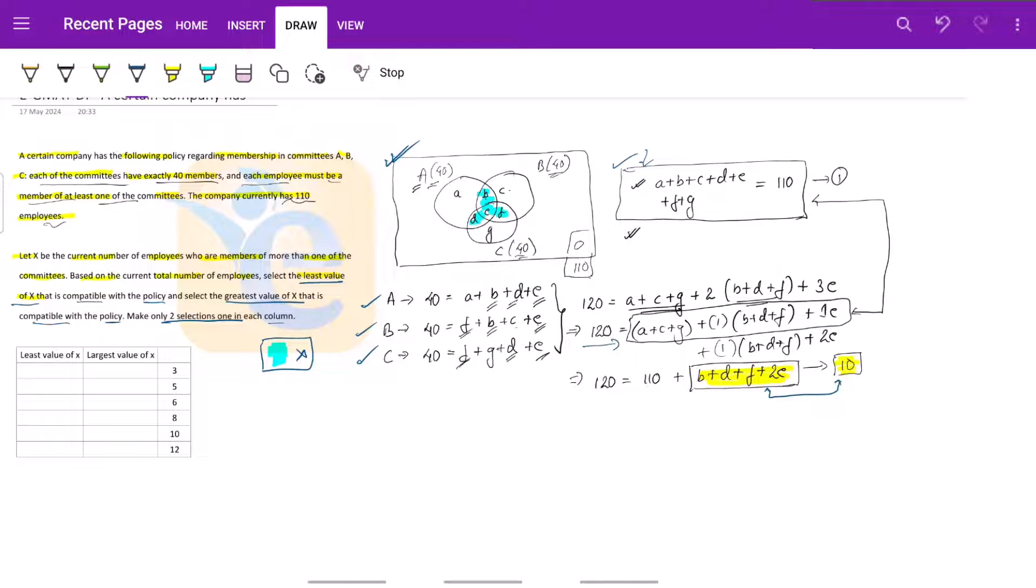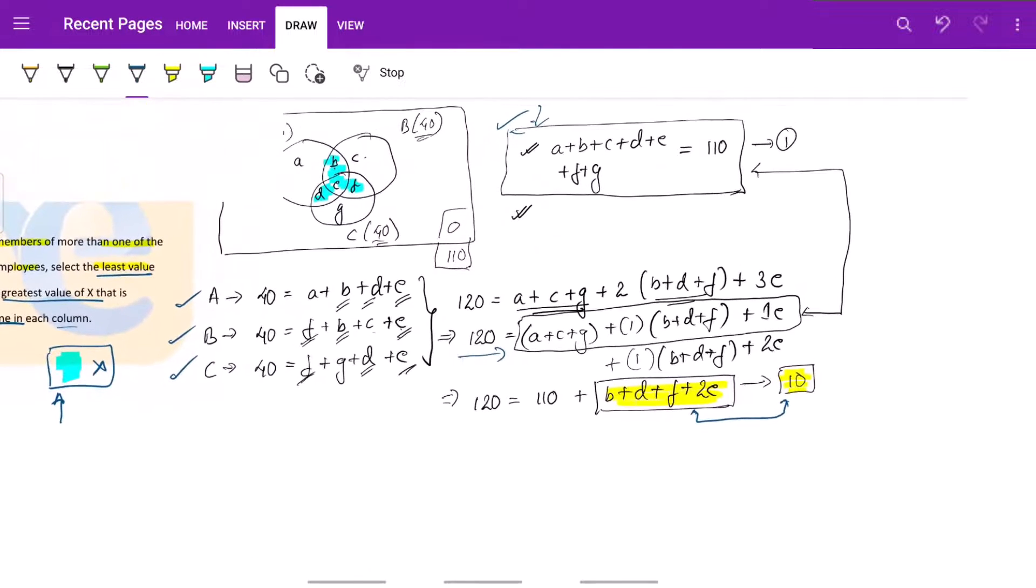Now, what do we need to do, we need to worry about our x. What is our x in terms of our variables? Our x is effectively b plus d plus f plus e. We need to minimize and maximize this value, this is our x, this is equal to x that we need to maximize and minimize.